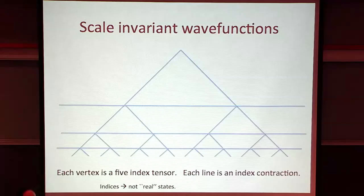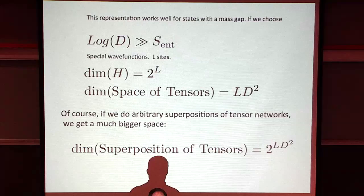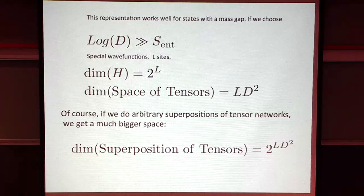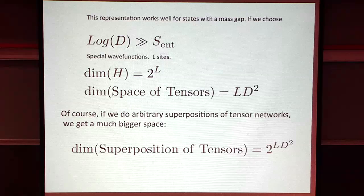For a given problem - say a particular spin chain where you are studying the ground state - you would find the tensors are concrete D-by-D dimensional matrices: two of them, one for spin up and one for spin down. You would find them numerically. They are chosen such that the wave function written in that way is the ground state of your particular Hamiltonian - it's annihilated by the Hamiltonian.